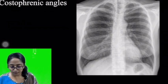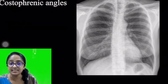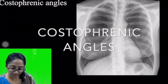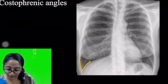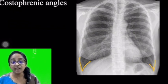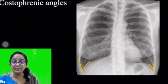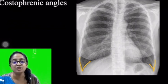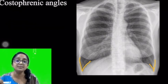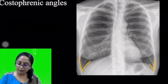Speaking of the diaphragm, another important aspect to assess in the chest radiograph is the costophrenic angle. As marked out here, the sharp acute angle formed by the contact of the pleura with the diaphragm is known as the costophrenic angle, and it should be acute and sharp. Any blunting signifies pathology — it could be due to pleural thickening or pleural effusion.